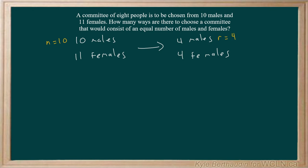We can do the same thinking here for the females. We have a total of 11 females, or n equals 11, and we are choosing, in other words r, exactly 4 of them.